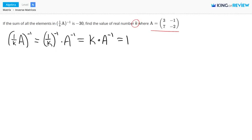So this is equal to k times the inverse of A, and we're given A. We have 3, negative 1, 7, and negative 2. So how do we find the inverse?